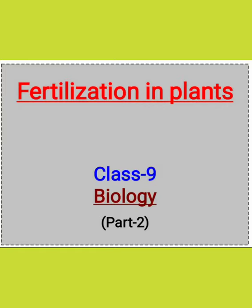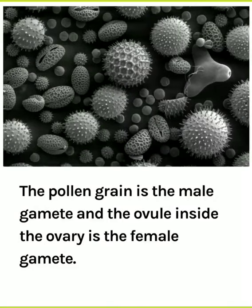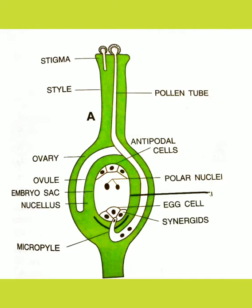Good morning students. Today in chapter number 5 we will read the second part, that is fertilization in plants. In the last video we read about pollination in plants, and now we will see how fertilization takes place in plants. As we know, the pollen grain is the male gamete and the ovule inside the ovary is the female gamete. So the fusion of this male and female gamete is called fertilization.